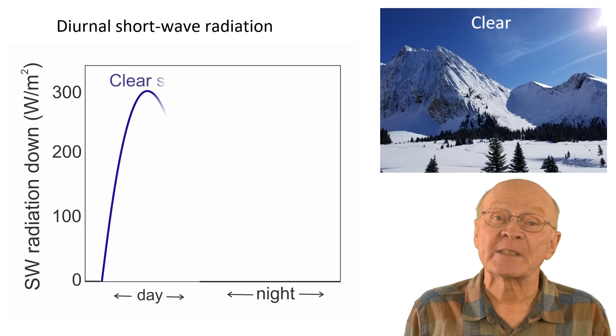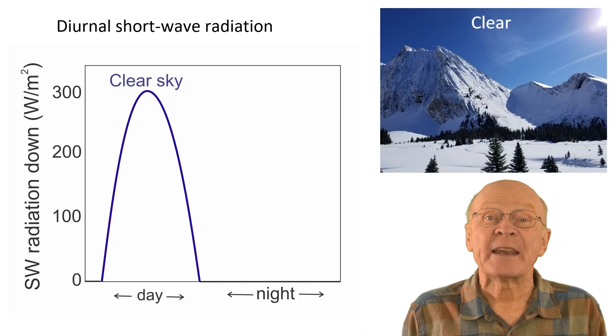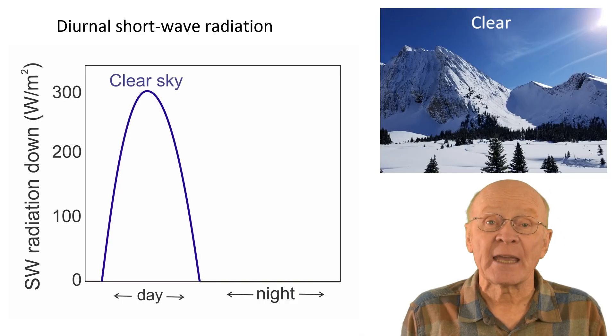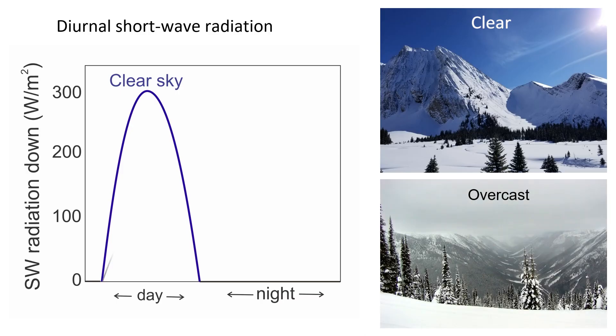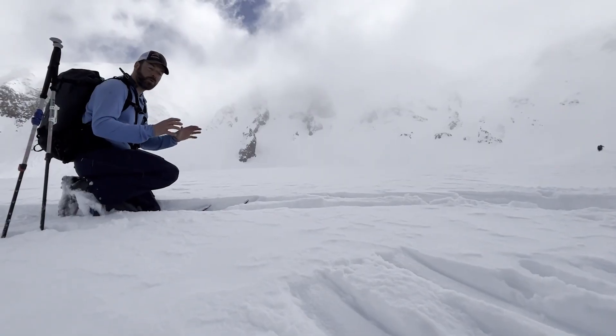Let's look at how shortwave radiation varies between day and night. Shortwave radiation from the sky peaks midday and is negligible at night. Also, less shortwave radiation — sometimes only about a third — reaches the snow surface when the sky is overcast compared to when the sky is clear. Of course, the cloud cover often changes during the day. Let's look at how the shortwave radiation reaching a north-facing slope can change when the sky changes from clear to broken.